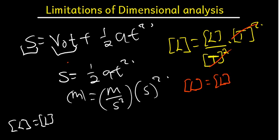We can see that this equation is dimensionally correct. If one comparison gives you a different result from the other, it means the equation is dimensionally incorrect. These are basically the limitations we need to know under dimensional analysis.